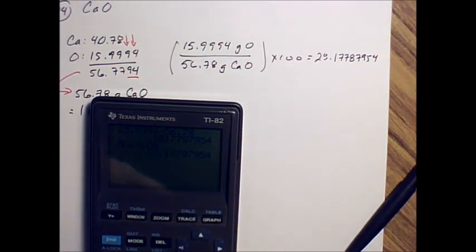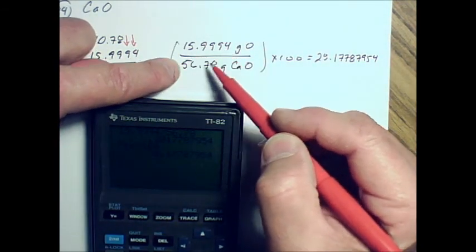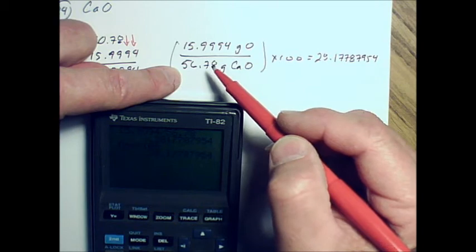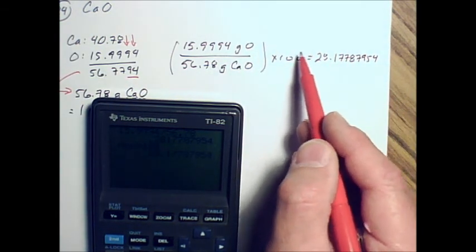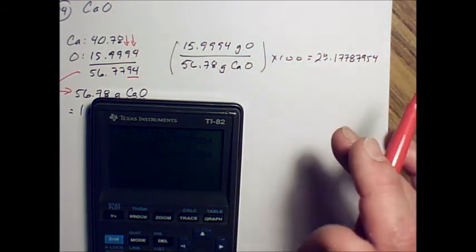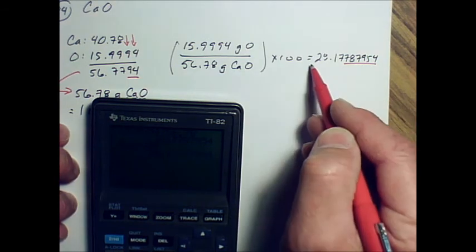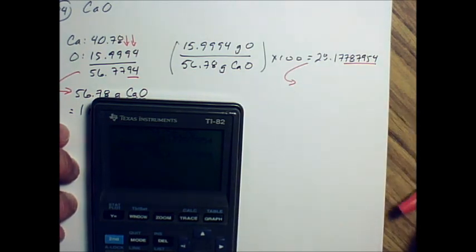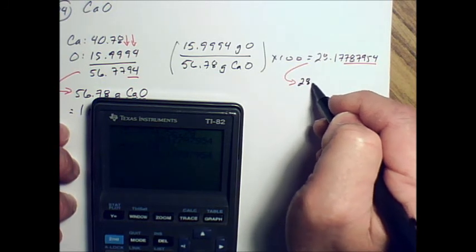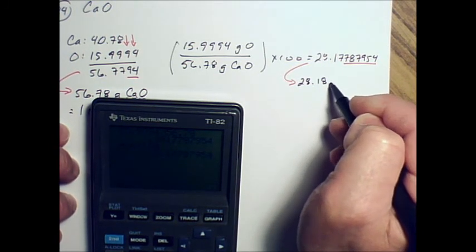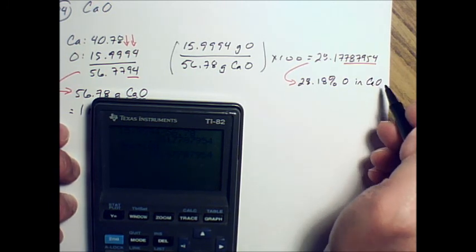We're going to round that off. Let's see, this measured or calculated number has six digits, this one has four. So we're going to use the multiplication and division rules. When you're multiplying by 100 here, that's an absolute number. We're not going to use that for figuring out significant digits. We need four digits here. That's 28.18% oxygen in calcium oxide.